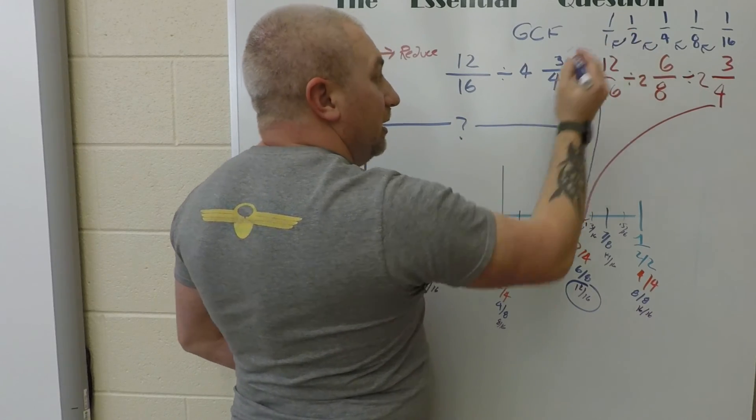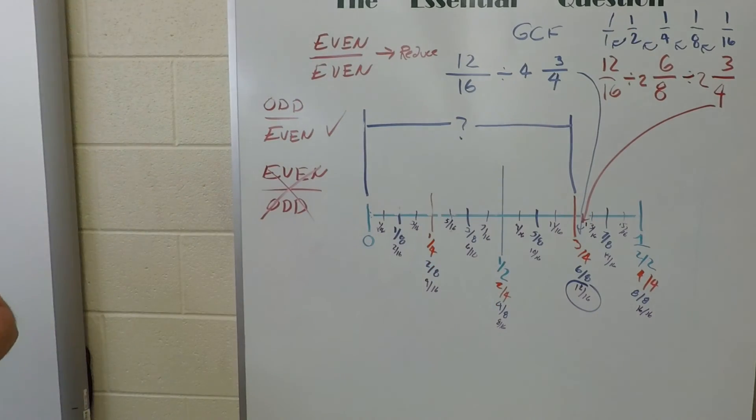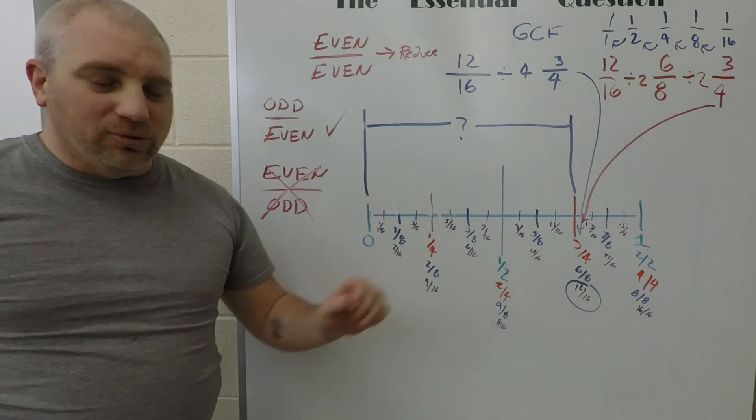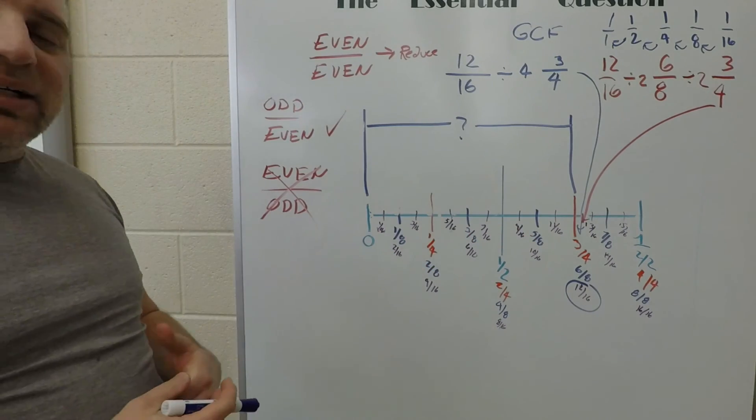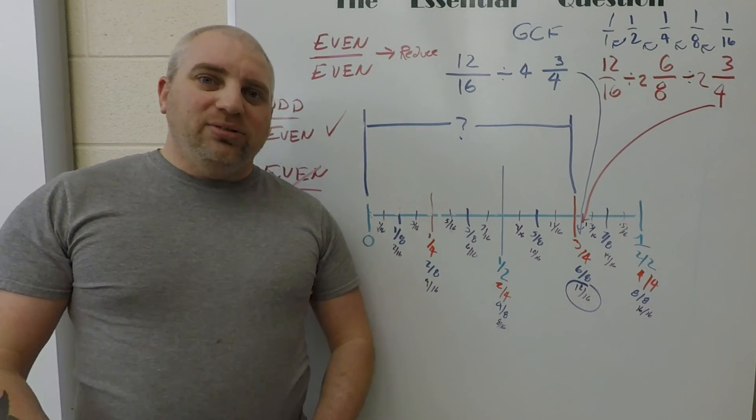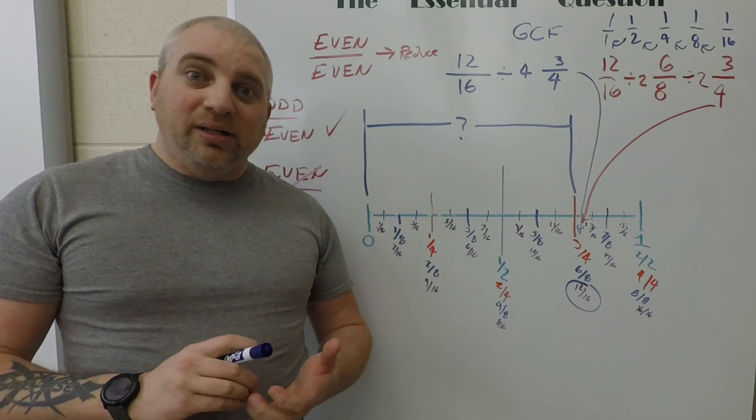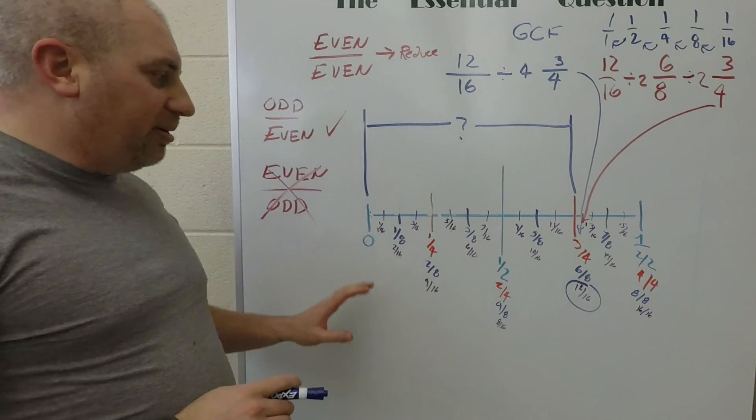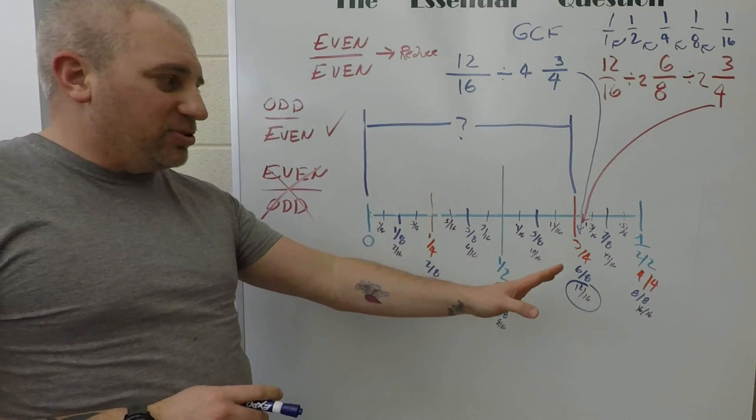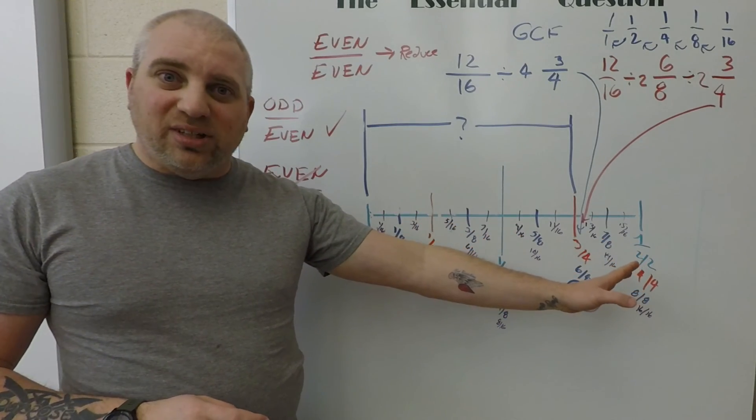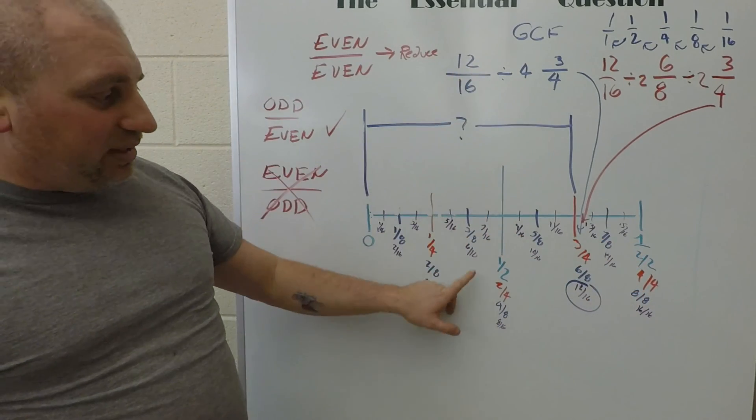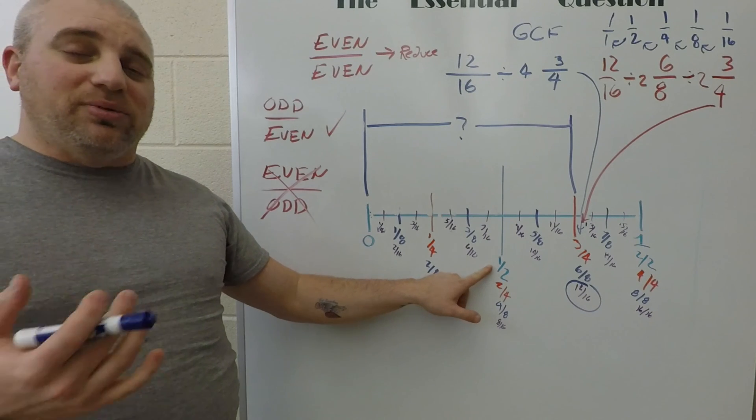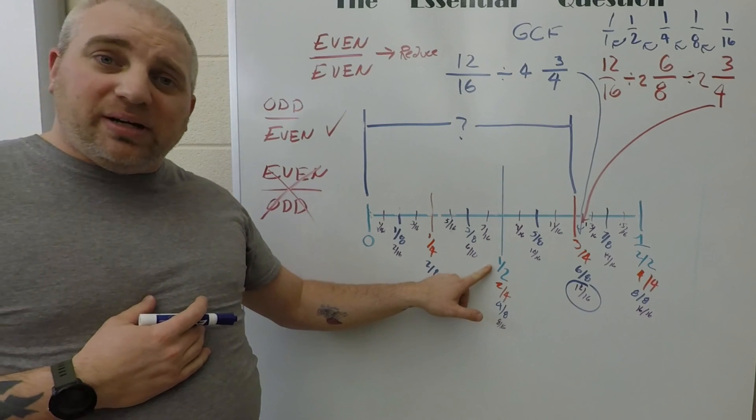So those are the basics of reading a ruler using fractional inches. It's one of those things that you need to practice—you don't get good at measurement by not doing it. The more you read these, the more comfortable you'll get with all of the different fractions. Ultimately, they're all in sixteenths in this case; we're just reducing them to get an easier-to-read number. So I hope that helps.